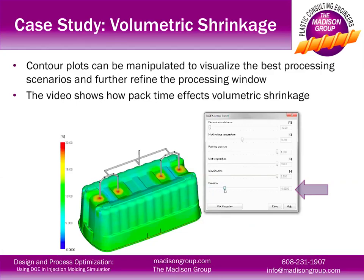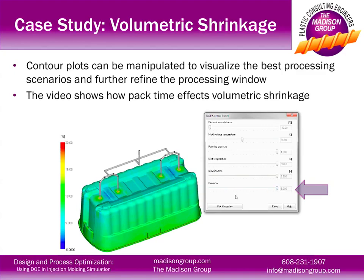In addition to the surface response plots, we can look at contour plots to visualize how part quality is affected by process parameters. Here we're showing how pack time affects volumetric shrinkage. Being able to visualize part quality based on process parameters is a very powerful tool. The DOE process allows for a very quick and effective method of identifying what is going to help make a better part and improve the process.